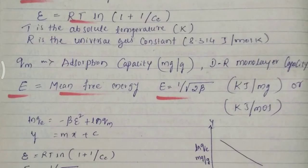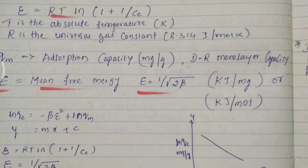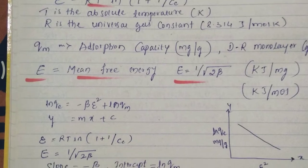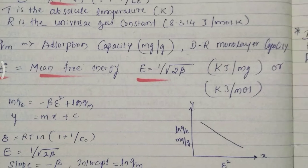qm is the adsorption capacity with unit milligram per gram, also you can say DR monolayer capacity. Capital E is the mean free energy and the formula will be equal to 1 divided by root 2 beta.